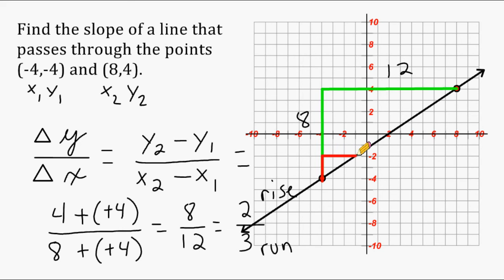And from here, we could go up 2 more and then a run of 3. Up 2 more, a run of 3. Up 2 more, and a run of 3. Which would eventually put us to the second point in question, which is located at positive 8, positive 4. And that is how you can find the slope of a line when you are given 2 points.